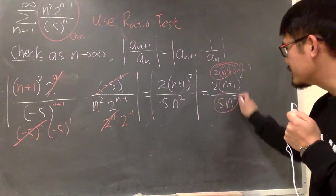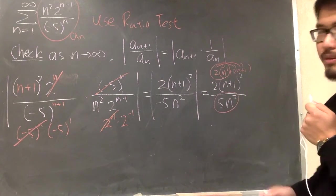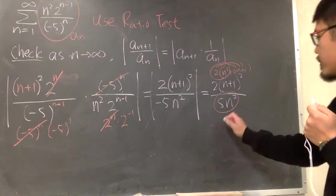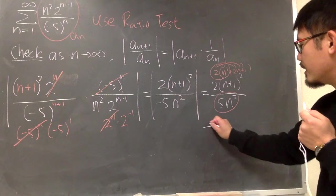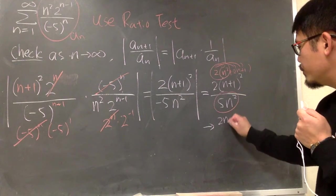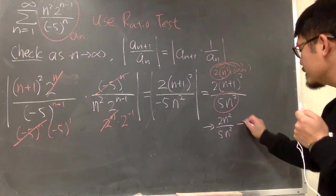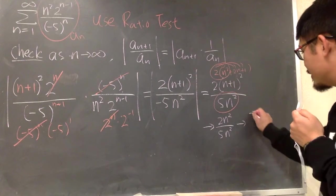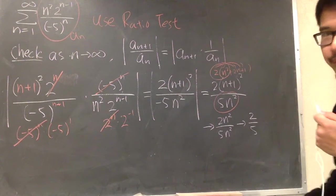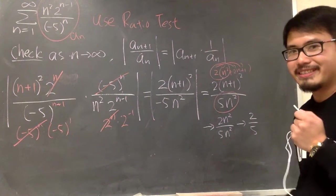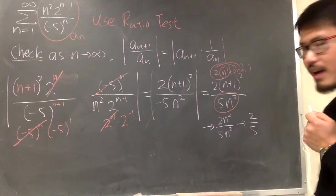And on the bottom, you have this, 5n square. As n goes to infinity, you only care about 2n square on the top over 5n square. Of course, the limit of this is just 2 over 5. We did the limit. And now we have the answer, which is 2 over 5.